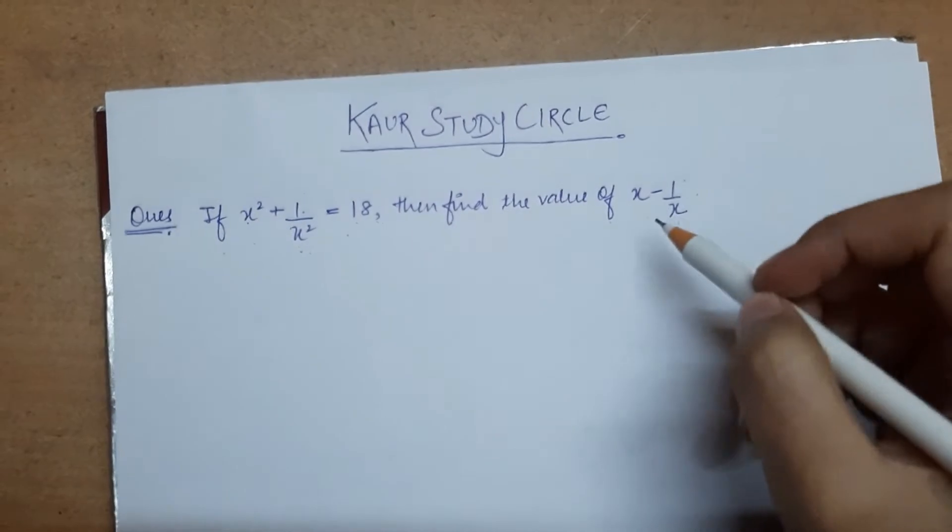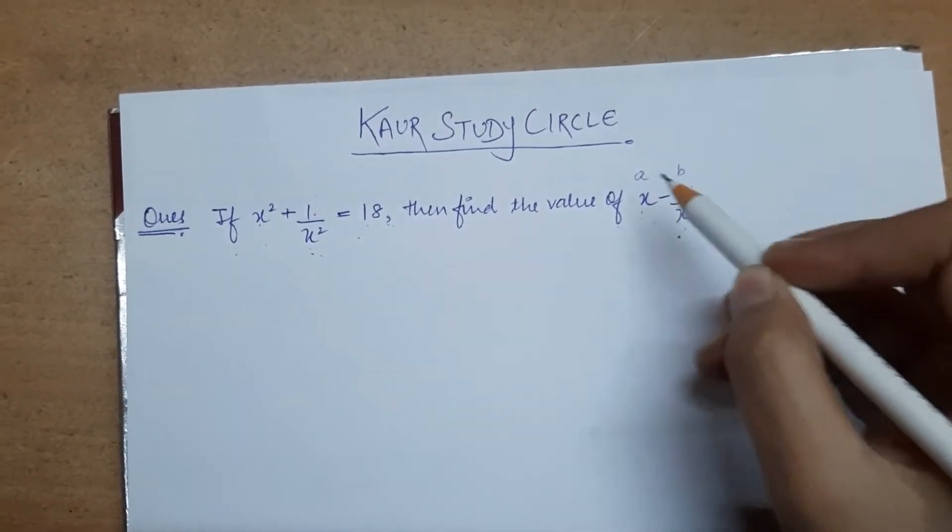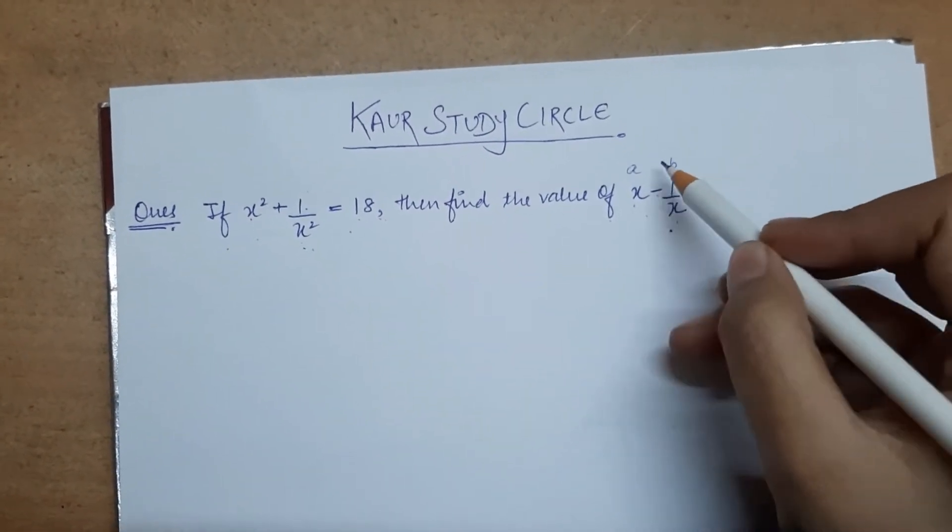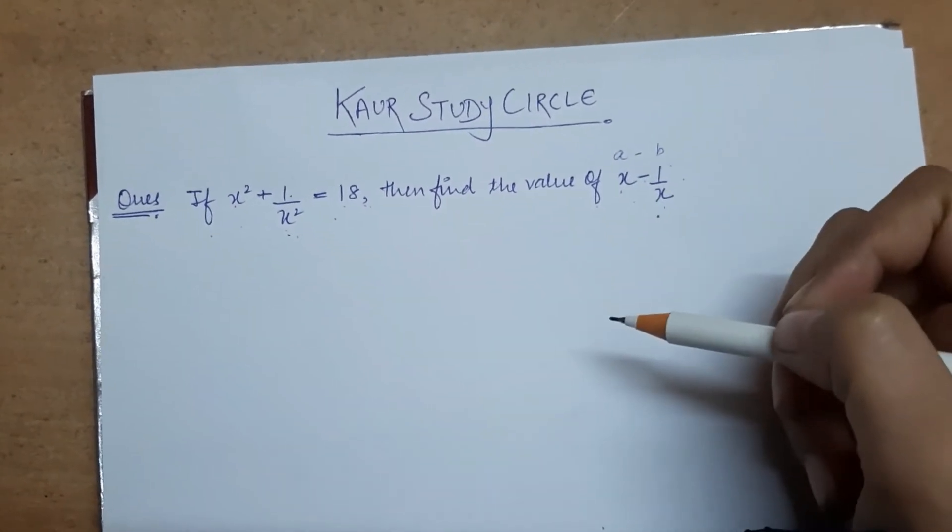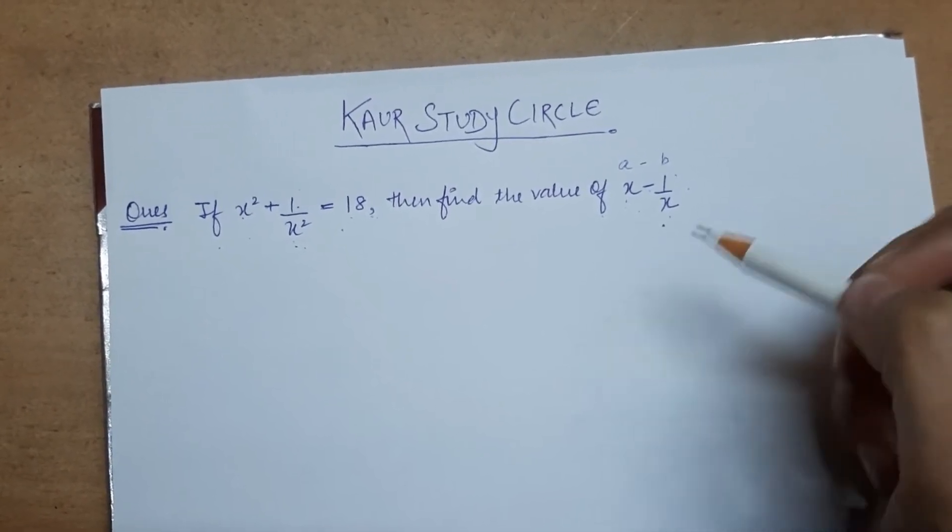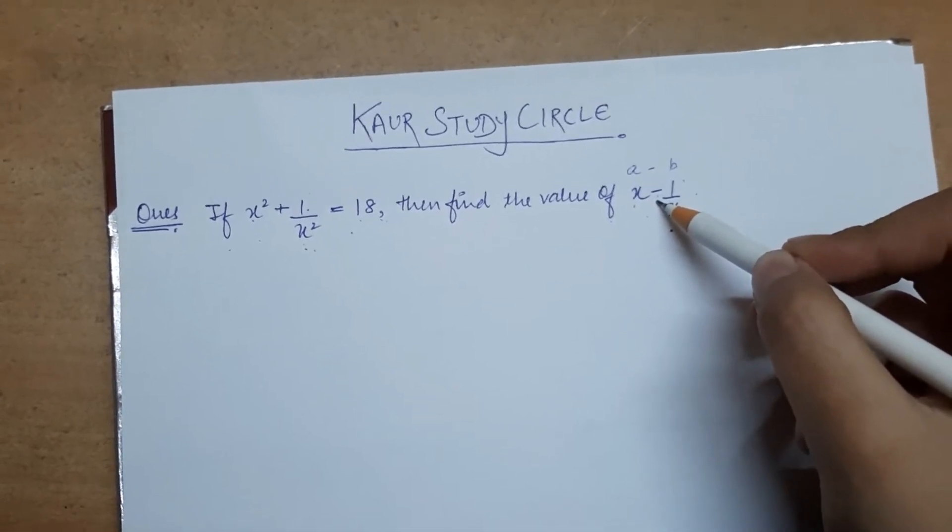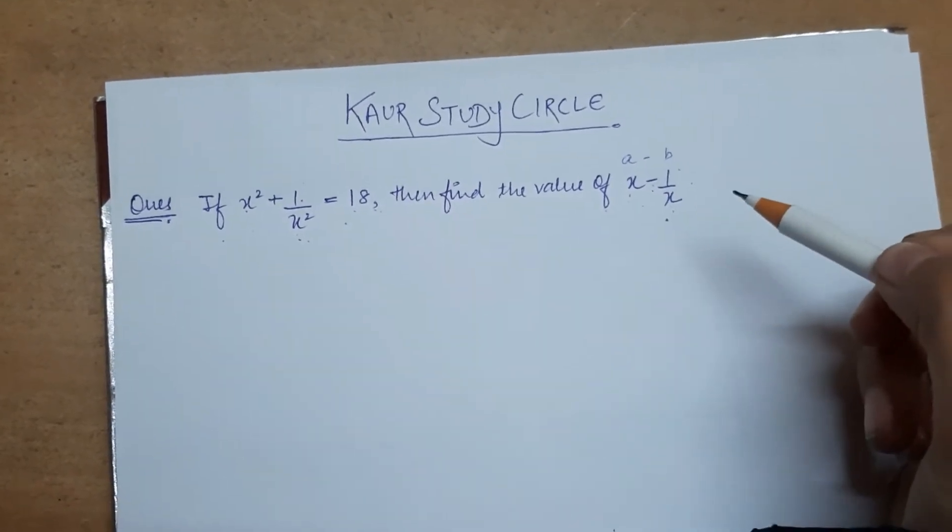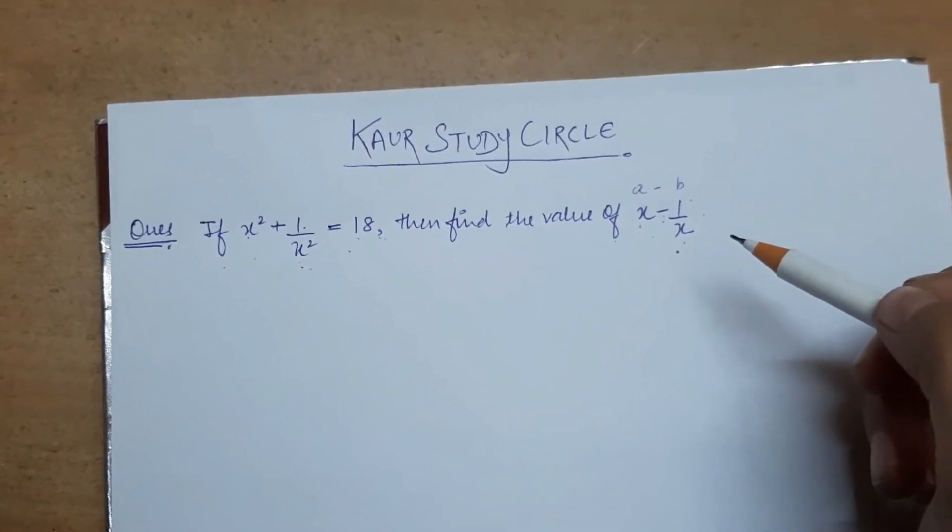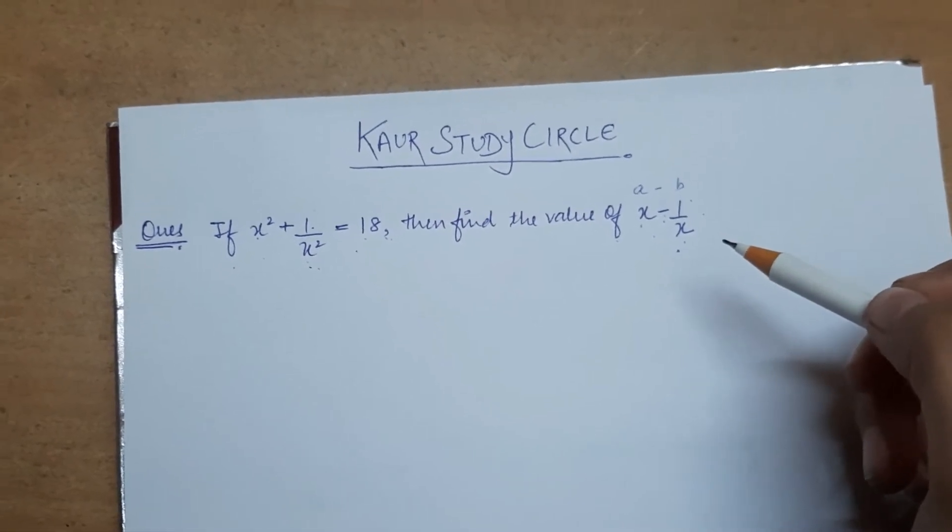So what we do here is we can see that if we consider this as a and this as b, with a minus sign in between, we should use the identity with minus. We have to determine which identity to use. The one we have to find has a negative sign, so this is basically a trick or hint you can use from the question.